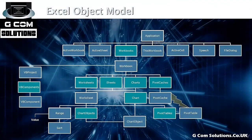First of all we have the Excel object model. This basically is the programmatic equivalent of the Excel interface. So at the top of the tree we have Excel itself, we have workbooks, workbook sheets, etc. In order to program in VBA you need to understand this object model.